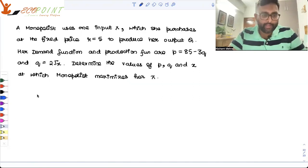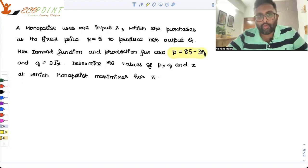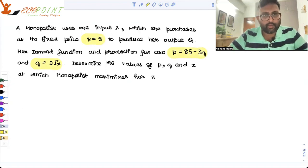A monopolist uses one input x, which she purchases at the fixed price r equals 5, to produce an output Q. Her demand function and production function are p equals 85 minus 3q and q equals 2 root x. And she's purchasing input at r equals 5.